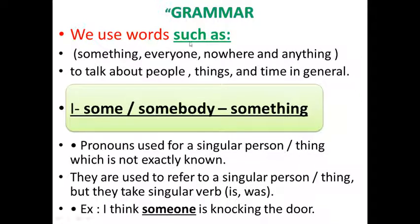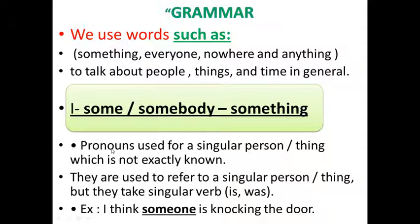We use words such as something, everyone, nowhere, and anything to talk about people, things, and places in general. First, we use some-, somebody, something — pronouns used for a singular person or thing which is not exactly known. They are used to refer to a singular person or thing, and they take a singular verb. Example: